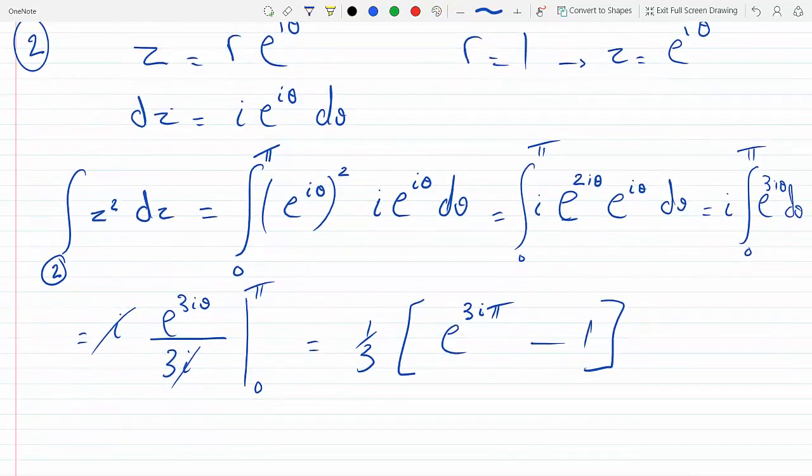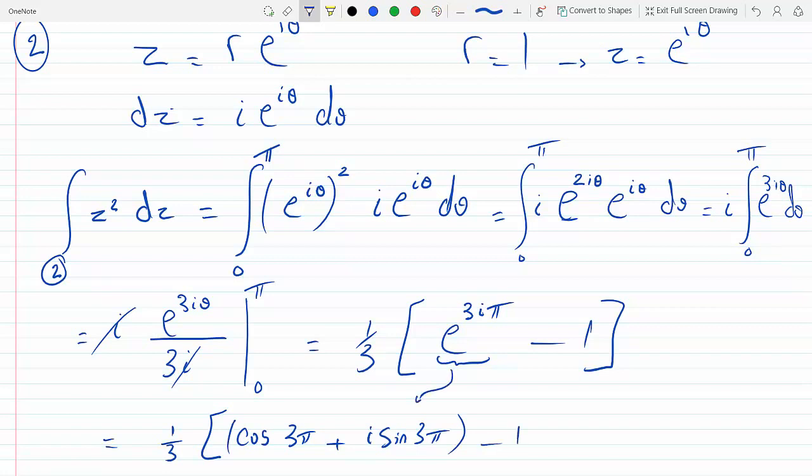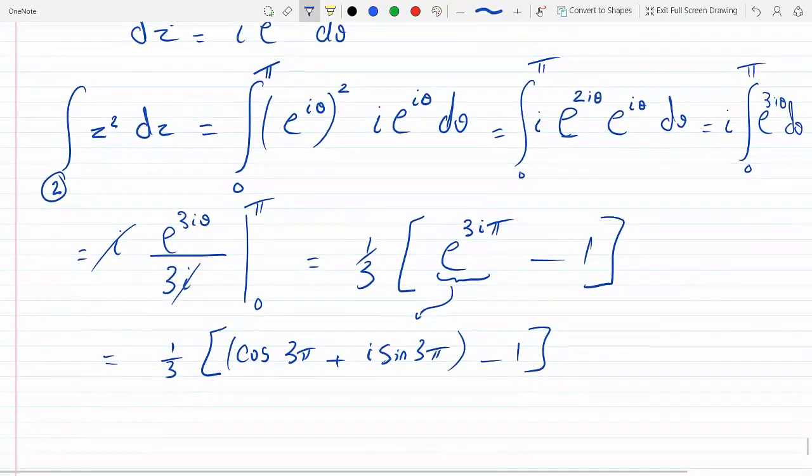Now let's expand this with sines and cosines. e to the i theta is cosine of the angle, so cosine three pi plus i sine three pi, minus one. Sine three pi is zero, so this guy goes away. This is a minus one, so we get minus two-thirds.